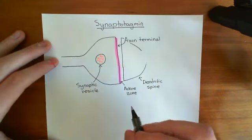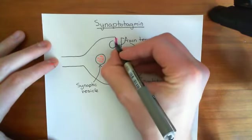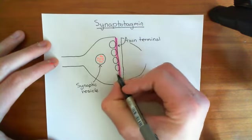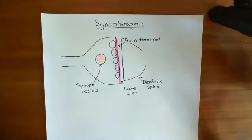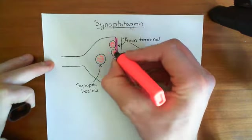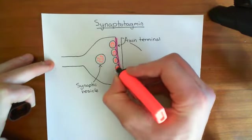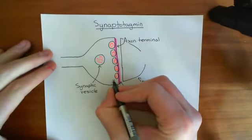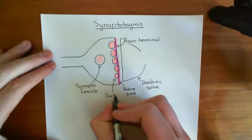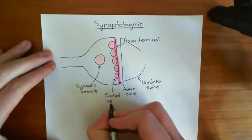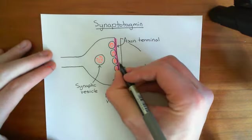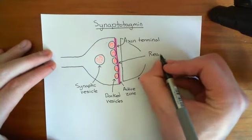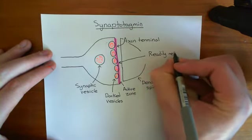What happens is that we dock synaptic vesicles at this active zone — we attach these synaptic vesicles to the membrane of the active zone so that they are ready to be released straight away when the action potential arrives. These docked vesicles are what are known as the readily releasable vesicle pool.